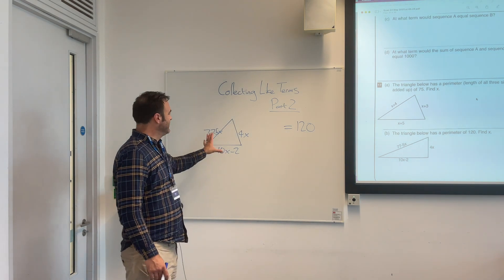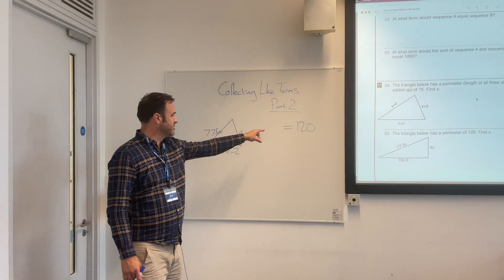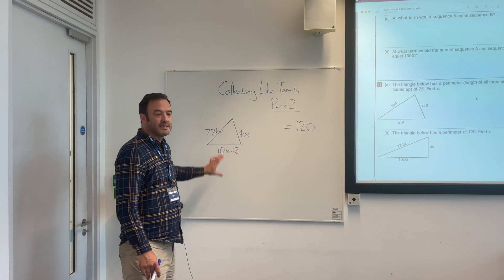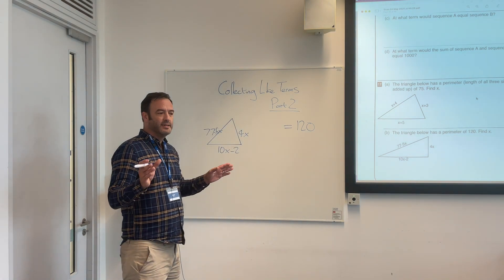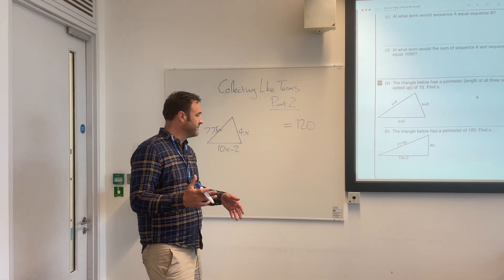So what we need to do is look at the problem. All of these sides equals 120. We need to simplify what it's saying here so we can get a clearer picture of what's going on and easily solve the problem.